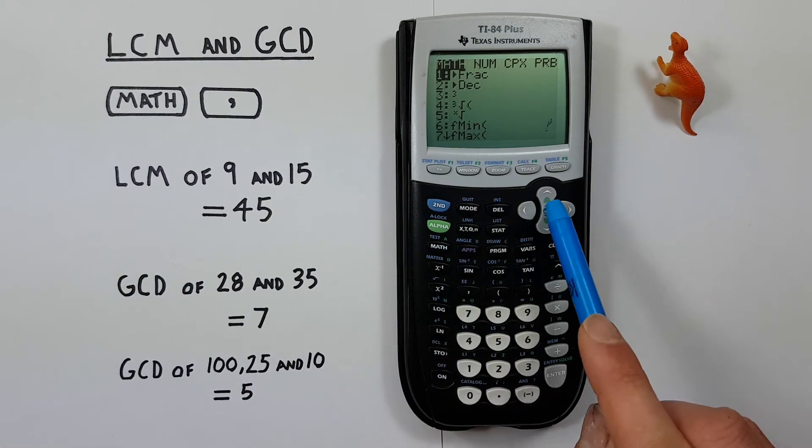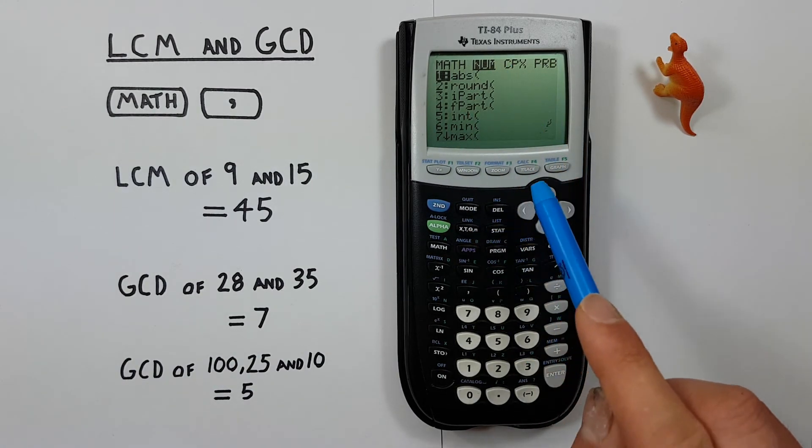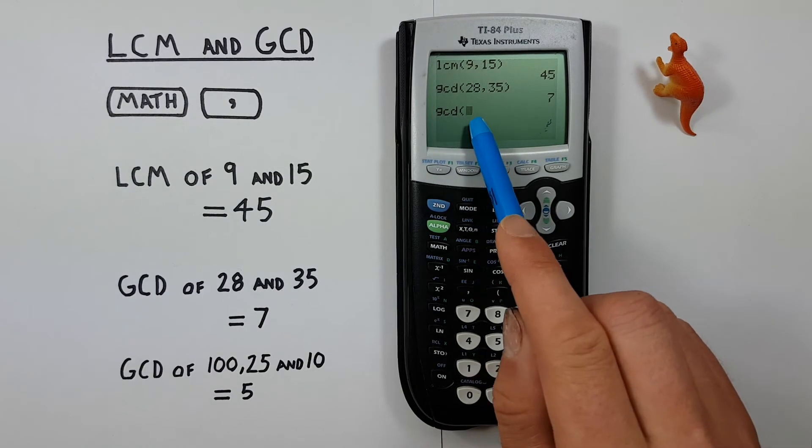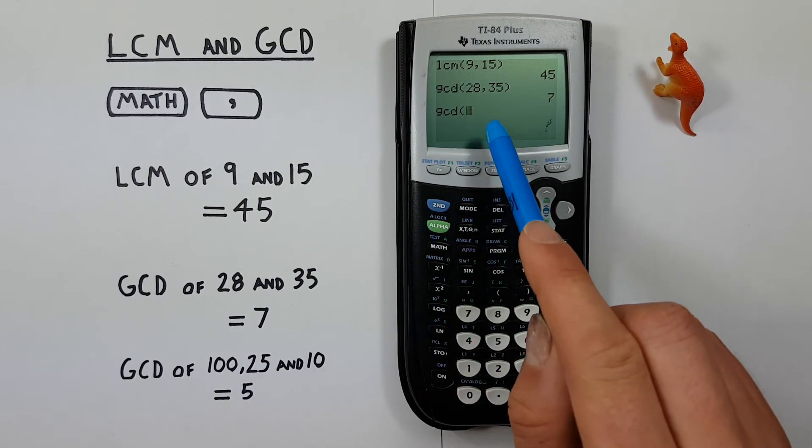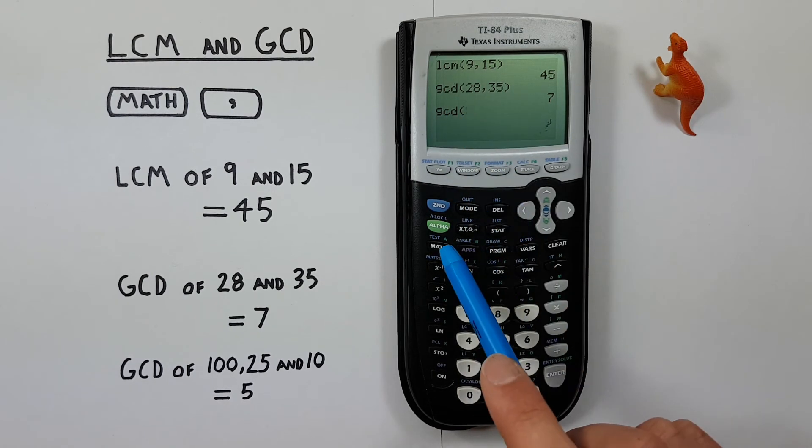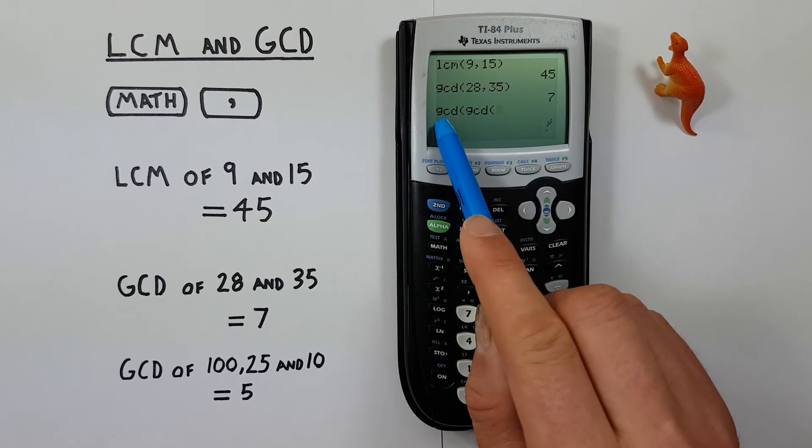we start by going to this num menu, and this time, instead of scrolling all the way down to number 9, which we remember is GCD, we'll just press 9, and there we go. GCD appears on the screen. But since we have 3, we have to embed a second GCD inside this bracket. So again, we go math over number 9. There we go.